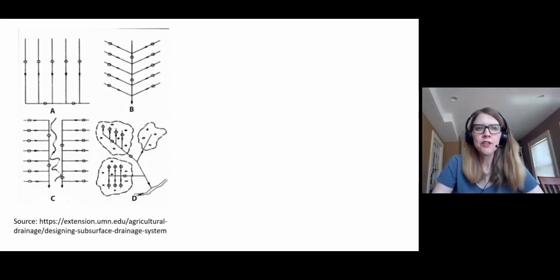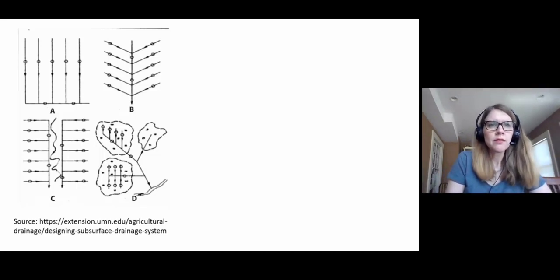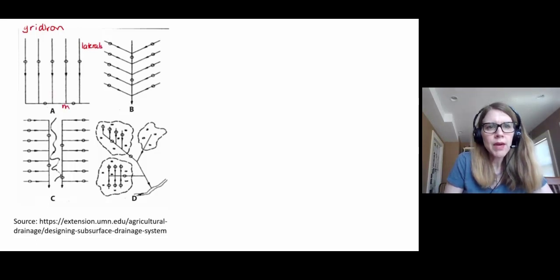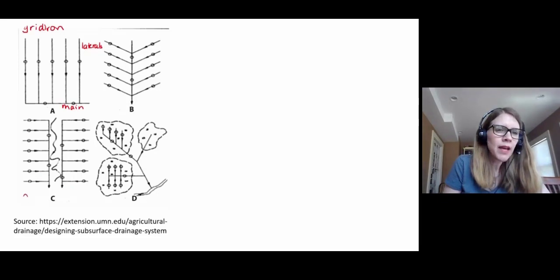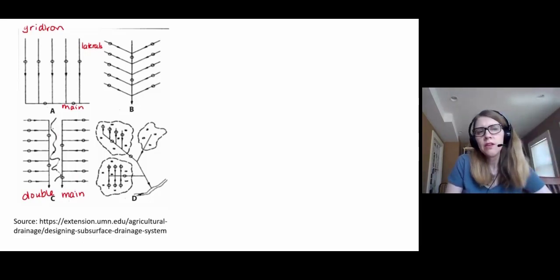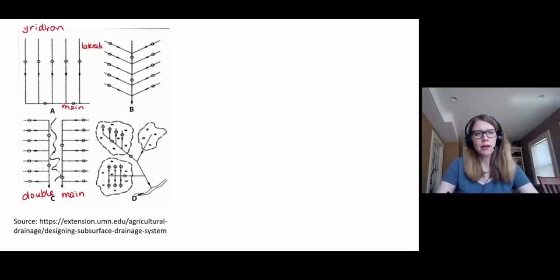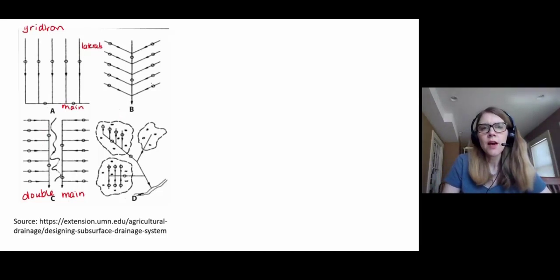So remember we talked about different drainage layouts. We talked about the gridiron layout here where you have these smaller lines here, the laterals, and then a single main line here. We might also have something called a double main. That's this one down below where maybe we've got a waterway, could be a grass waterway even. Sometimes we use this kind of construction to keep saturated conditions out of a grass waterway when we're trying to get that grass to establish.